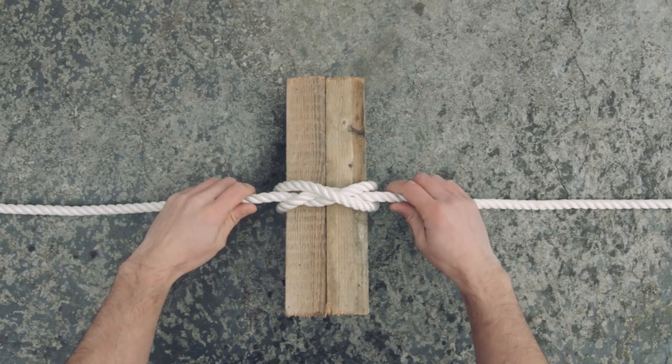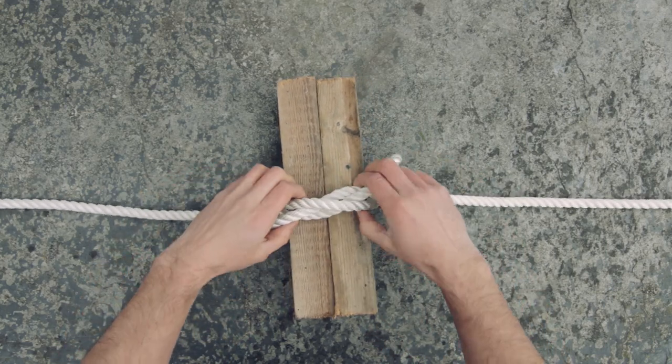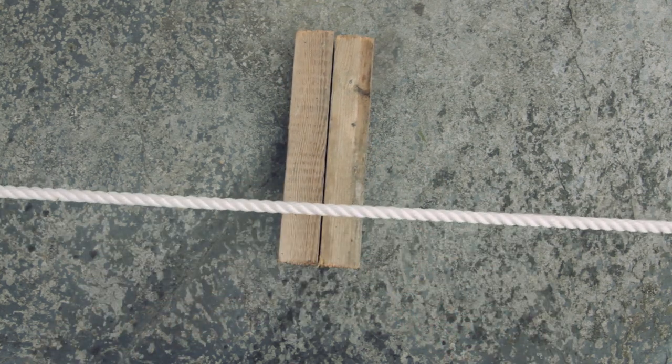To untie, push the ropes on either side towards each other and then slide the knot off and pull it and it should just come undone.